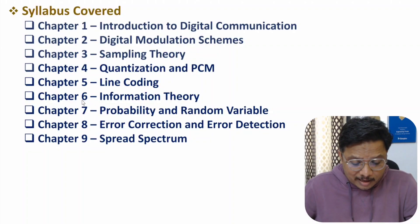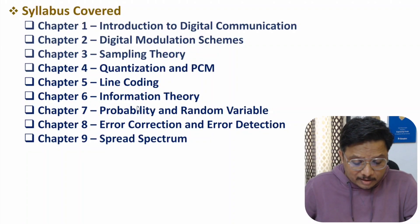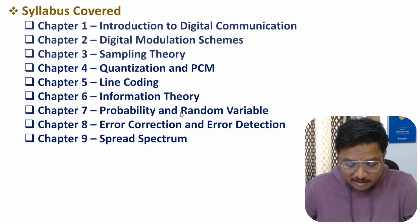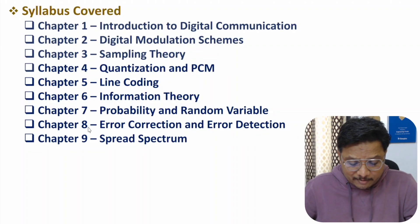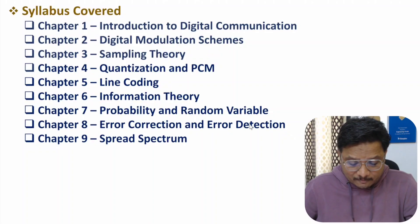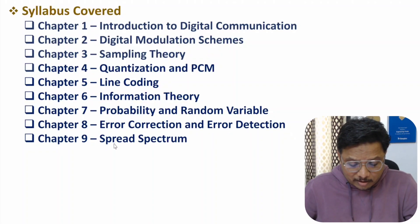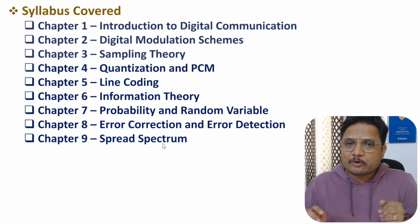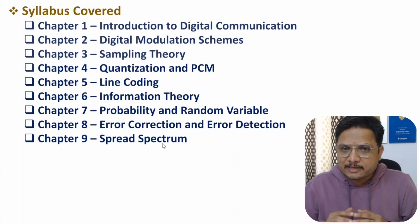In the sixth chapter, I have explained information theory. In the seventh chapter, I have discussed probability and random variables. In chapter eight, I have explained error correction and error detection. And in the last chapter, I have discussed spread spectrum. So that is how in total nine chapters are covered.